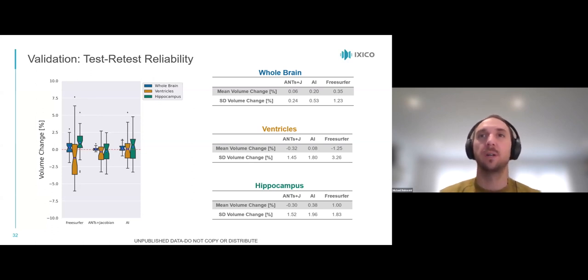In the test-retest reliability, we expect zero atrophy, shown as a red dashed line on the left, across all subjects and regions. Both ANTs and Jacobian and our AI method achieve mean volume change of less than 0.4% across all regions. This is not achieved by FreeSurfer, which shows larger mean atrophy values for ventricles, 1.25%, and the hippocampus, 1.0%. Overall, our method performs similar to ANTs and Jacobian. They both outperform the multi-time point method FreeSurfer.